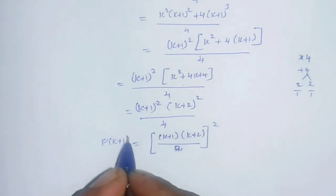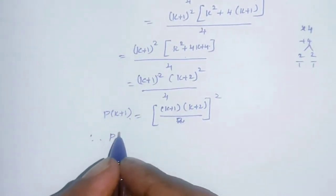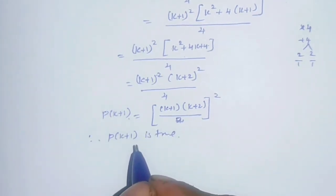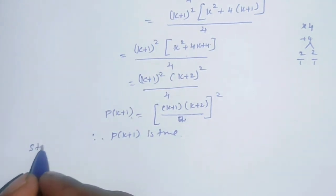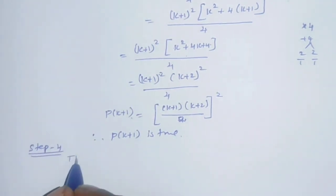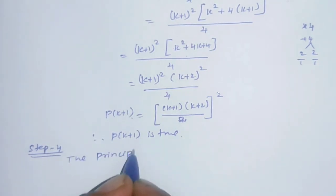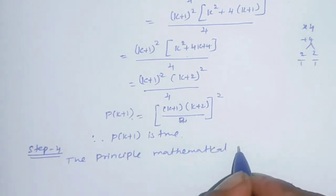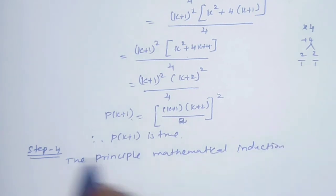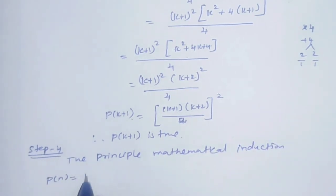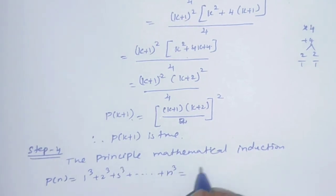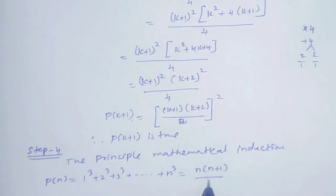Therefore P(k+1) is true. Since P(1) is true, P(k) is true, and P(k+1) is true, by the principle of mathematical induction, P(n) is true for all n. That is, 1³ + 2³ + 3³ + ... + n³ = [n(n+1)/2]² is true.